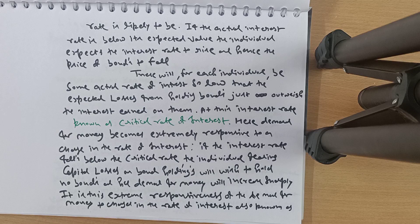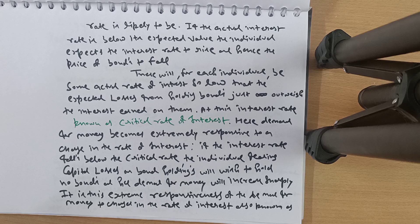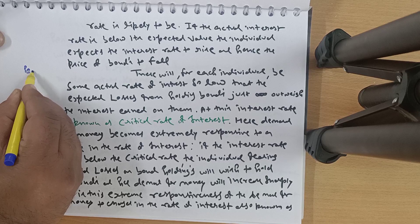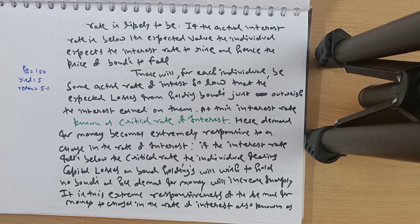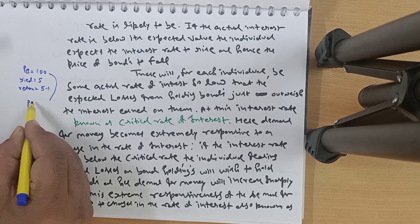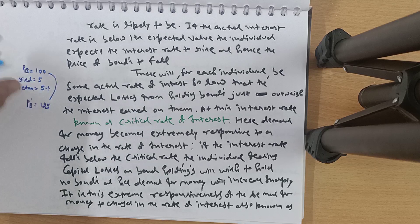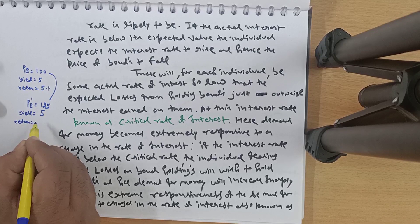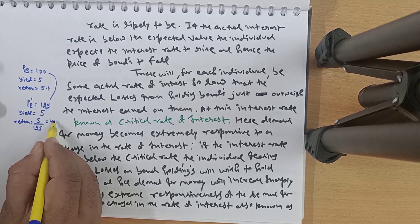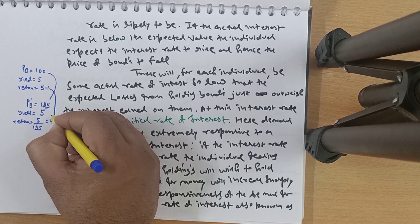Hence the price of bonds is expected to fall. There is an inverse relation between price of bond and rate of interest. For example, suppose the price of a bond is 100 and the yield is 5 rupees — that gives a 5% return. If the bond price rises to 125 in the secondary market, the yield is still 5 rupees on face value, so the return is now 4%. That is the inverse relationship between bond price and rate of interest.